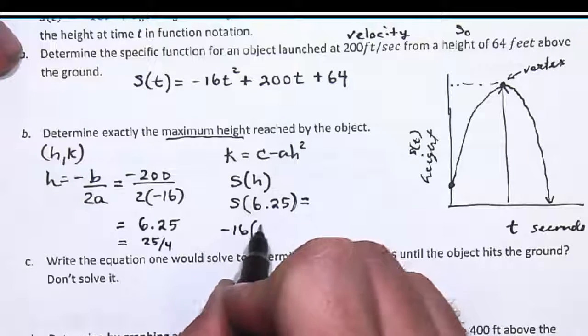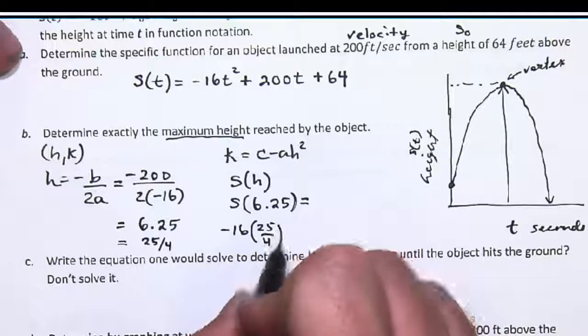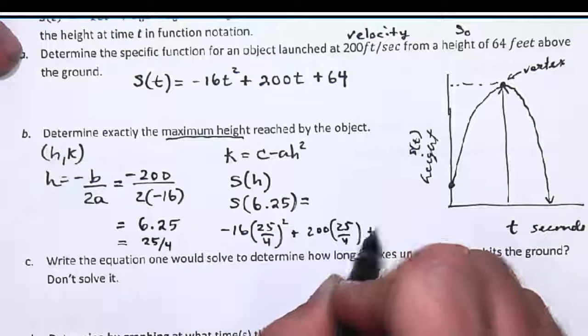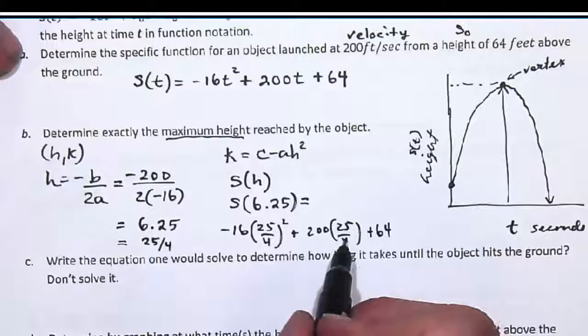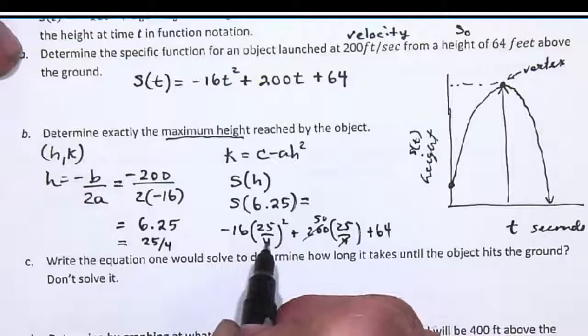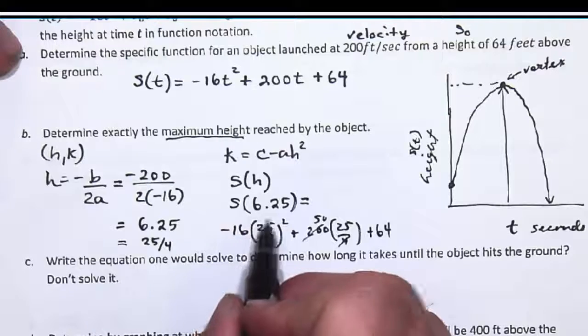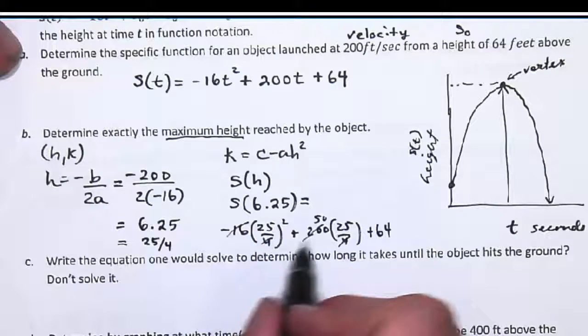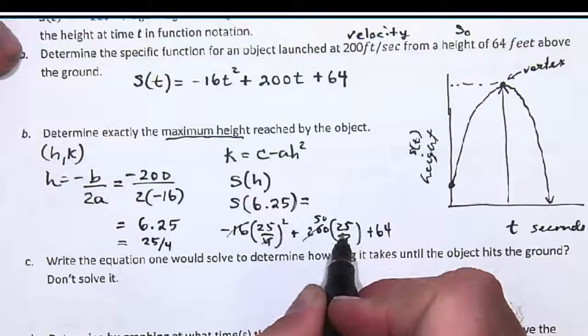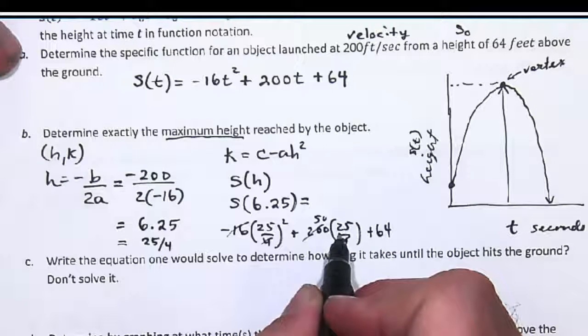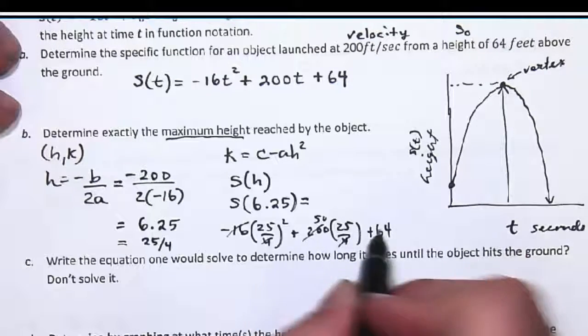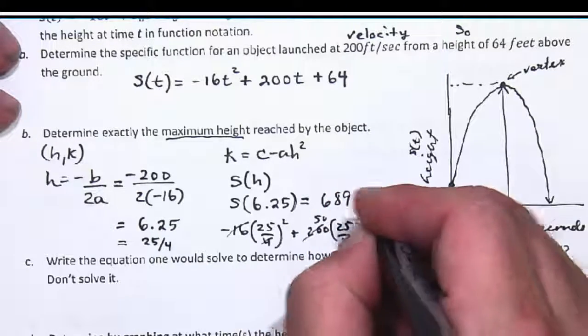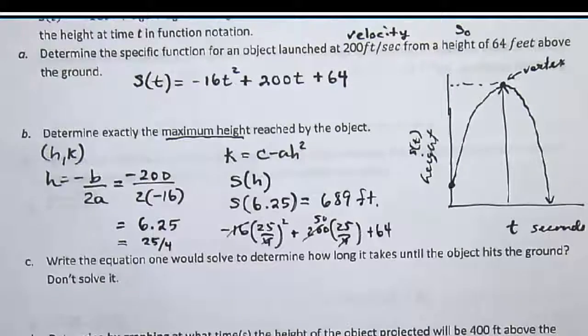So plugging this in, and you could use a calculator on this part but I don't have one, so here we go. Negative 16(25/4)² plus 200 times 25/4 plus 64. The 4 goes into that 50 times, this will be 16, this will be 6.25, the 16 will cancel. You get negative 6.25 squared plus 12.50, so that will be 6.25 plus 64, you get 689 feet.